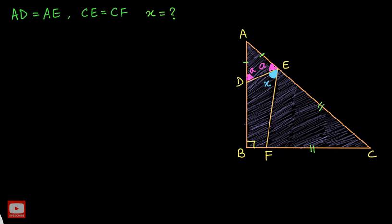In the same way, I will name angle CEF as angle B. Then, using the same property of isosceles triangles, angle CFE will also be B.